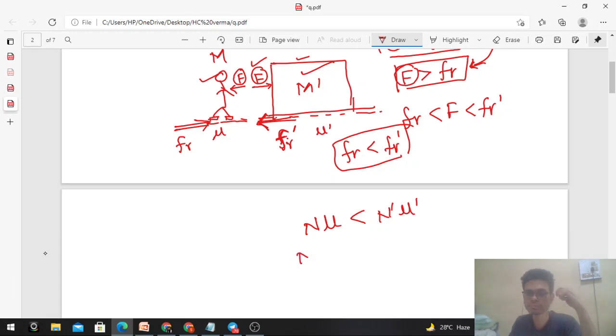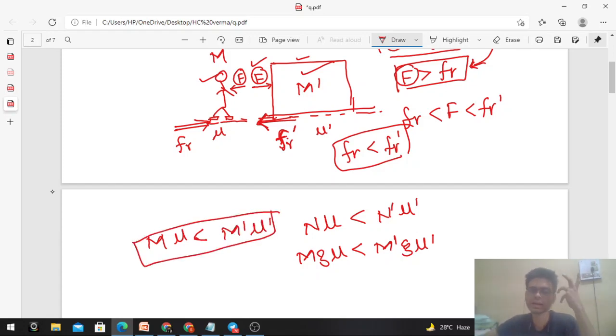So you see, the value of N is Mg, into μ should be less than M'g into μ'. So from here, the condition is Mμ is less than M'μ'. This is the required condition.